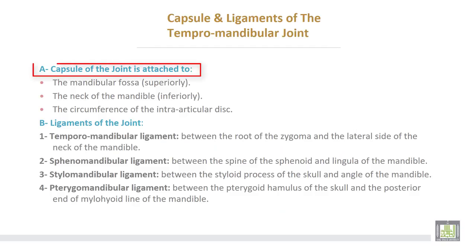Capsule and ligaments of the temporomandibular joint. The capsule of the joint is attached: number one, to the mandibular fossa superiorly; the neck of the mandible inferiorly; and the circumference of the intra-articular disc.